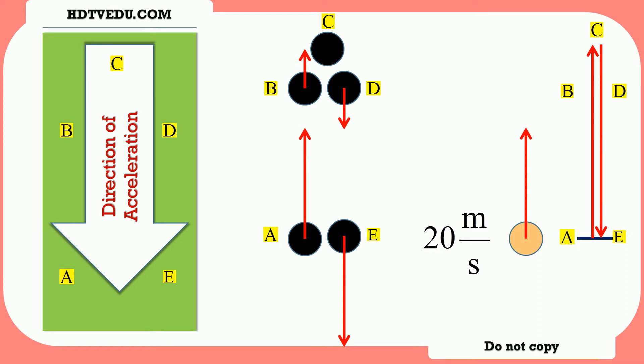Speed at point A is 20 meters per second. Velocity at point A is positive 20 meters per second, because we define positive Y as vertically up. It doesn't matter where we are — point A, B, C, D, or E — the pull of the Earth is always vertically down, so the acceleration is along negative Y.